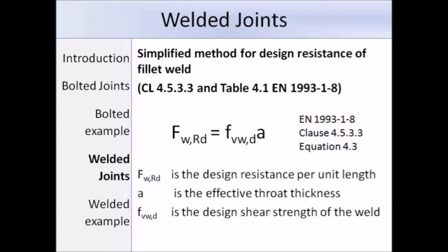This is equation 4.3. In the previous slide we had the term FWRD, the design shear resistance per unit length, and expression 4.3 tells us how to work out that resistance. It is equal to the design shear stress of the weld FVWD times the effective throat thickness of the weld A.